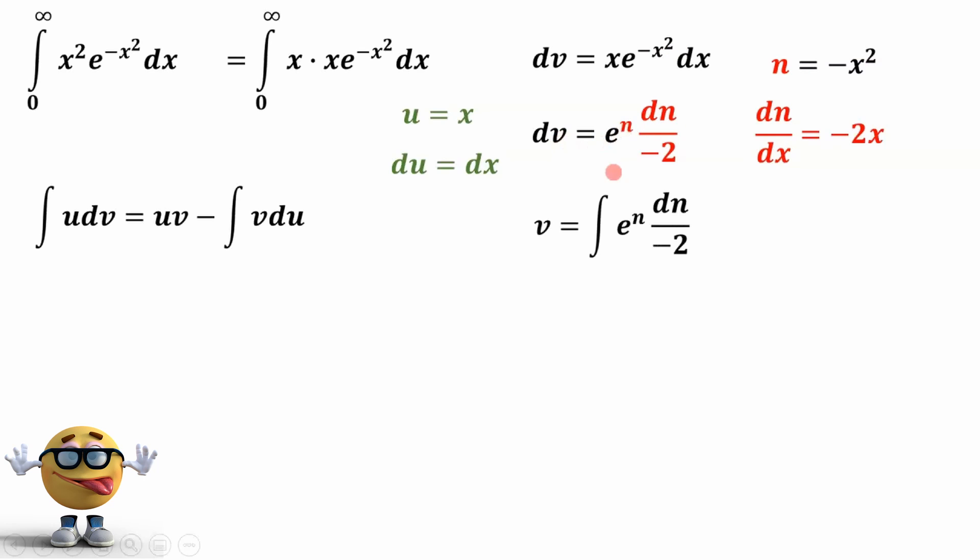We can now evaluate this integral. So the integral of dv is v, and the integral of this is our friend. The integral of e to the n dn is just e to the n. And the negative 1 half comes along for the ride. We're going to put the negative in the numerator. Now we don't care about n, we care about x. So we're going to substitute this back and get negative e to the negative x squared over 2.